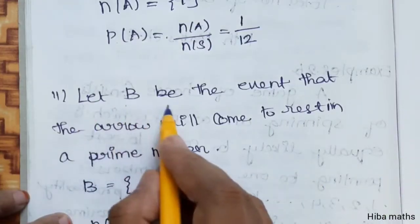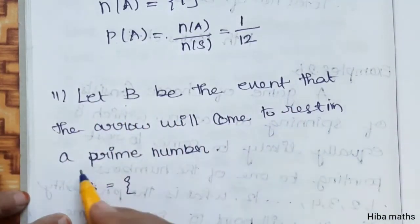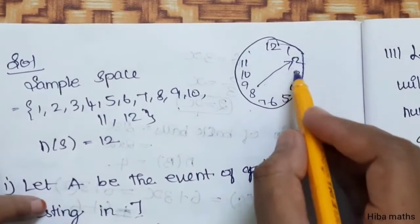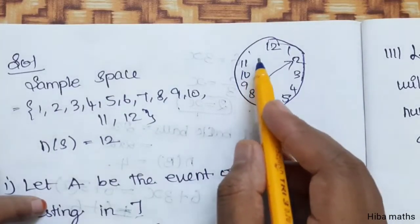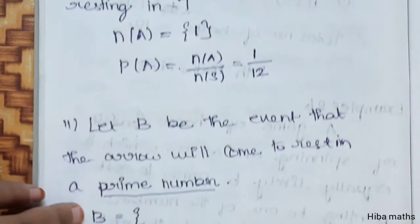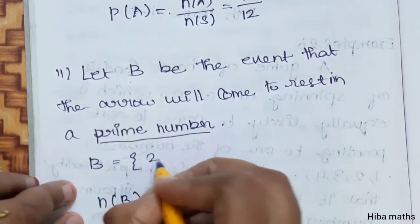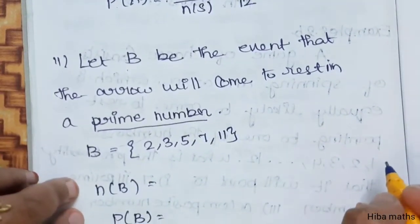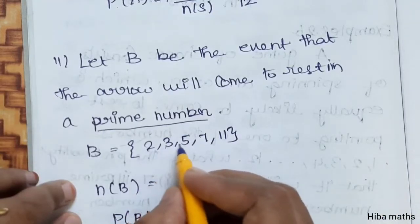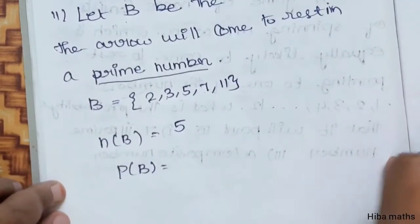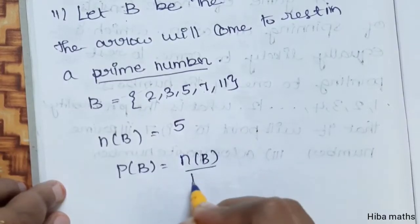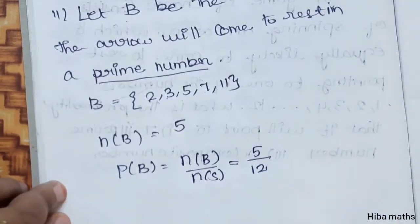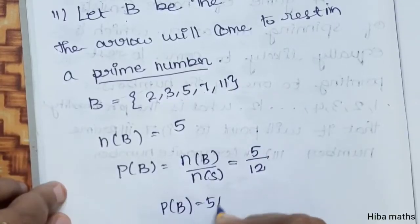Let B be the event that the arrow will come to rest on a prime number. The prime numbers from 1 to 12 are 2, 3, 5, 7, and 11 — that is 5 prime numbers. So, P of B equals n of B divided by n of S, which is 5 by 12. So, P of B equals 5/12.